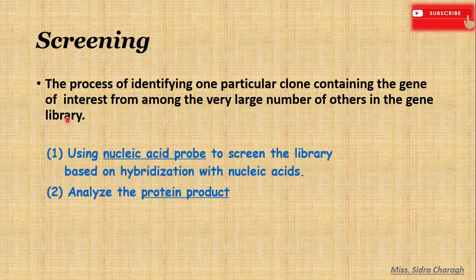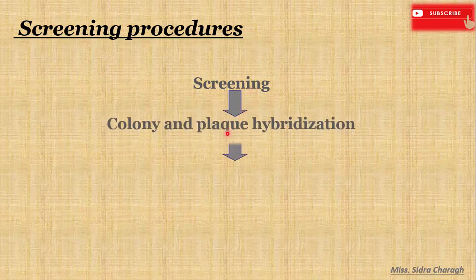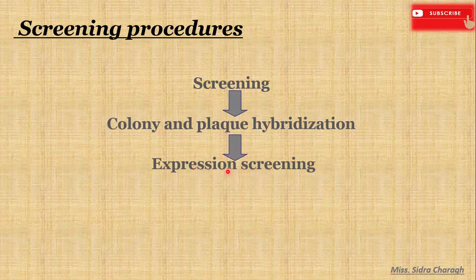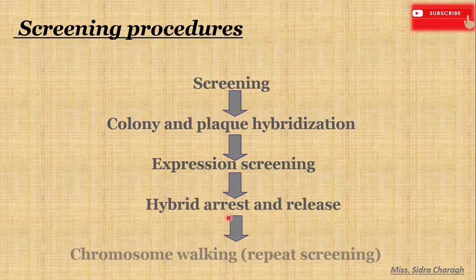We perform screening by different ways. One method is nucleic acid hybridization, where we use a nucleic acid probe to screen the library based on hybridization with nucleic acid. Another is analyzing the protein product. Screening procedures involve colony and plaque hybridization, expression screening, hybrid arrest and release, and chromosome walking.